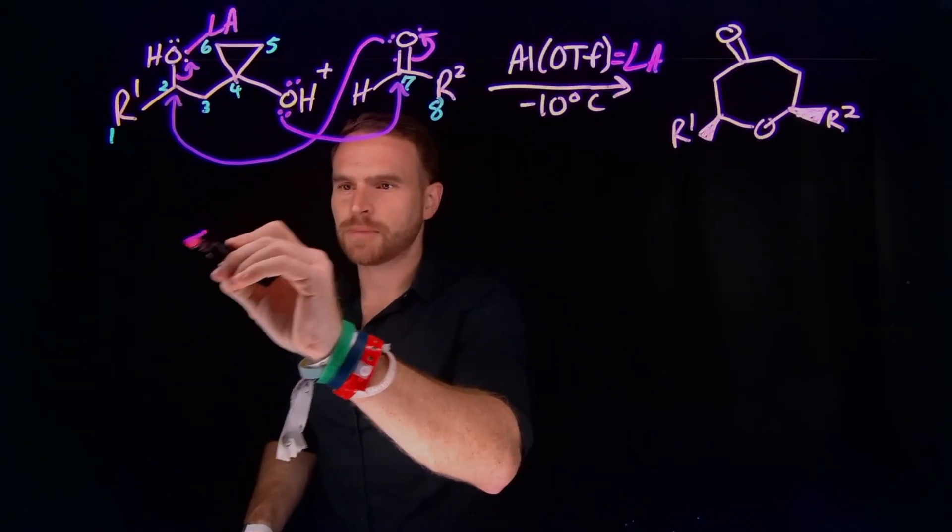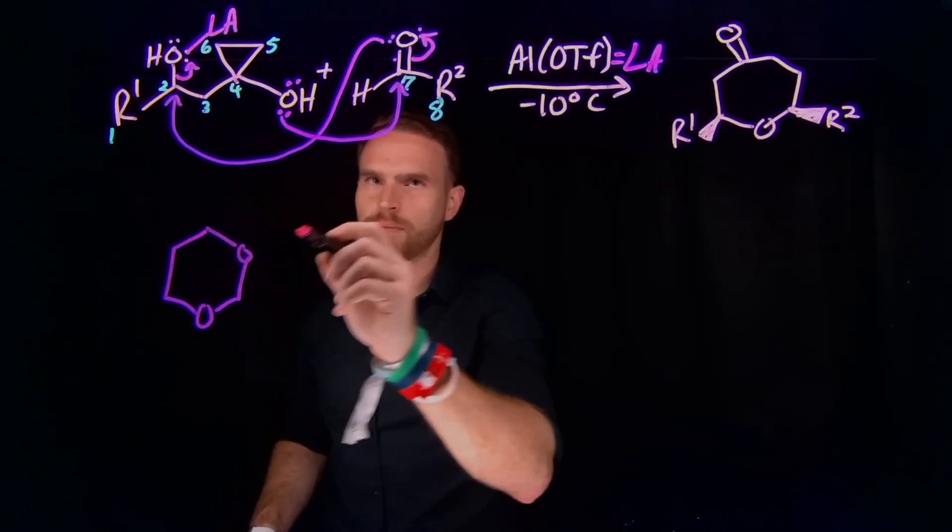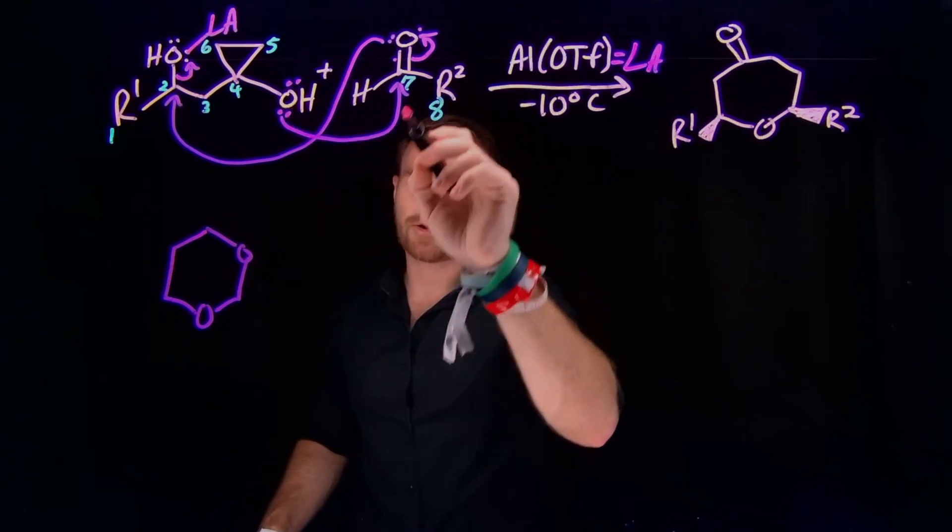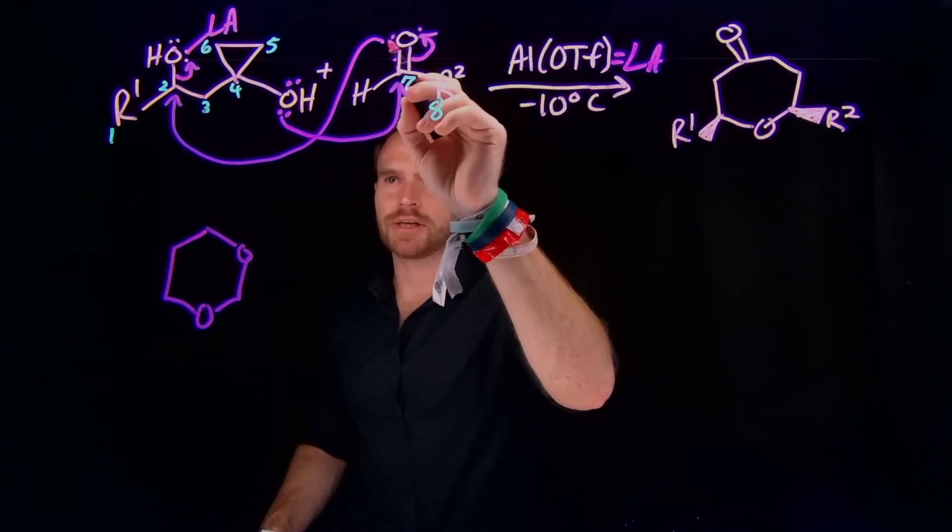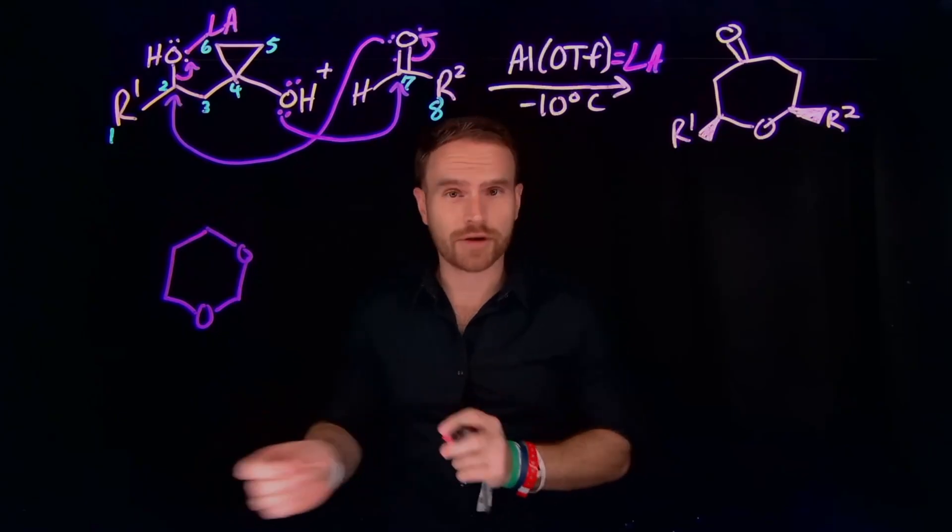So this forms a brand new six-membered ring where two of the positions on that ring are going to be oxygen atoms because remember we had an oxygen on this alcohol which attacked carbon number 7 and this oxygen actually attacked carbon number 2 so 7 and 2 are going to become very close to one another.